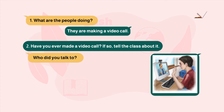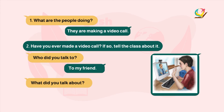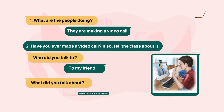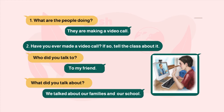The answer is: they are making a video call. If so, tell the class about it. The answer to who did you talk to: to my friend. What did you talk about? عن ماذا تحدثتم؟ The answer is: we talked about our families and our school. تحدثنا عن عائلاتنا وعن المدرسة.